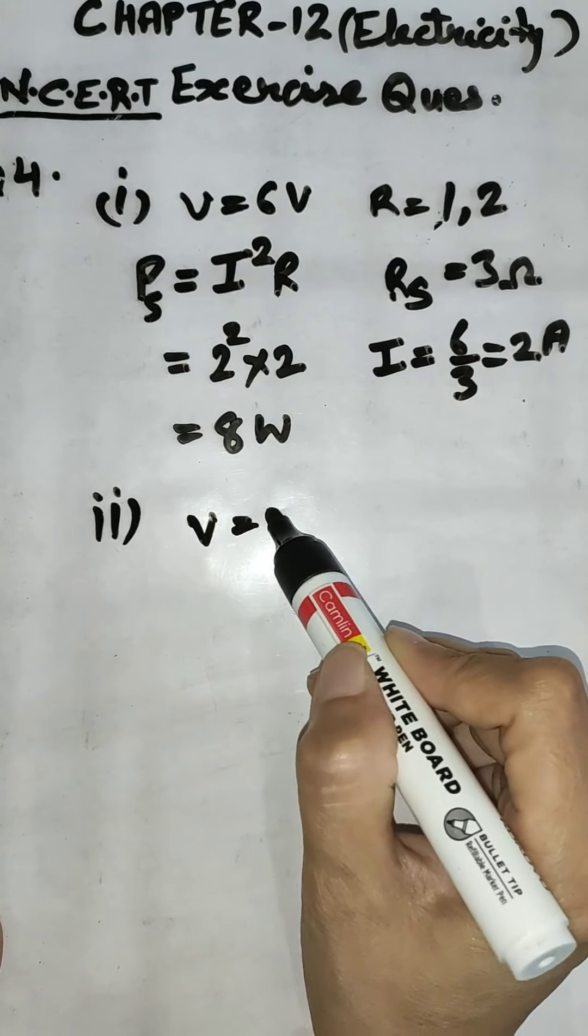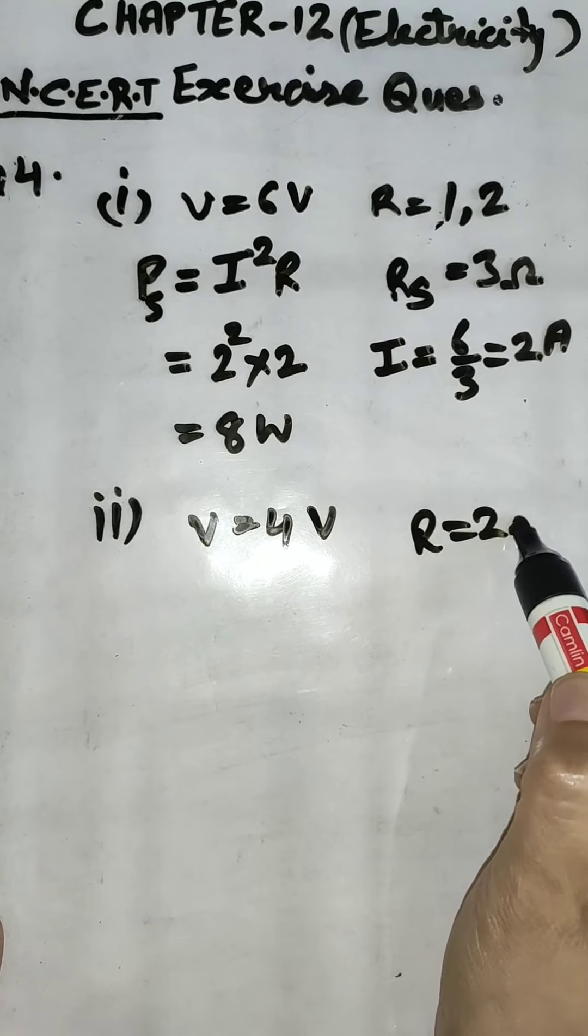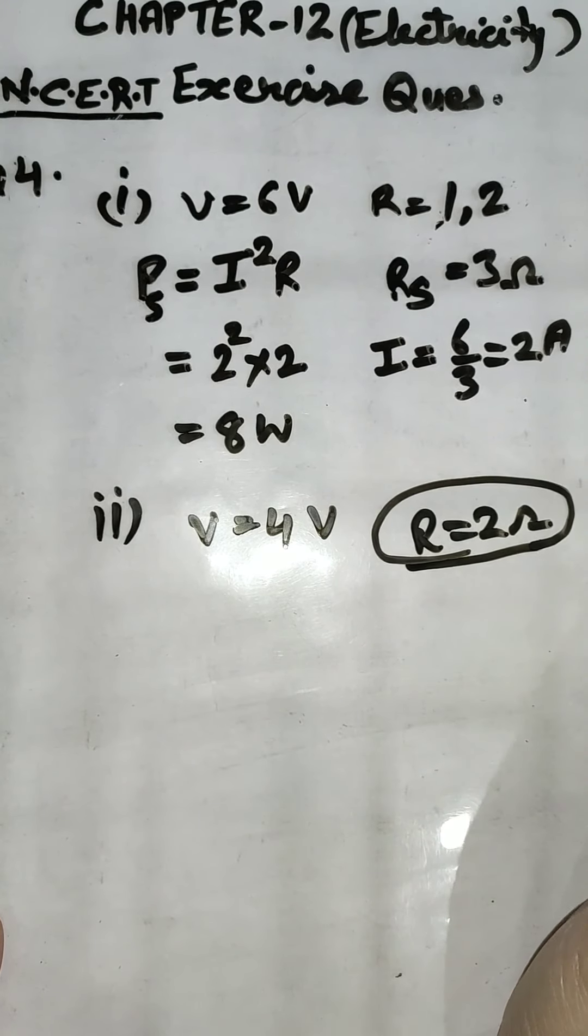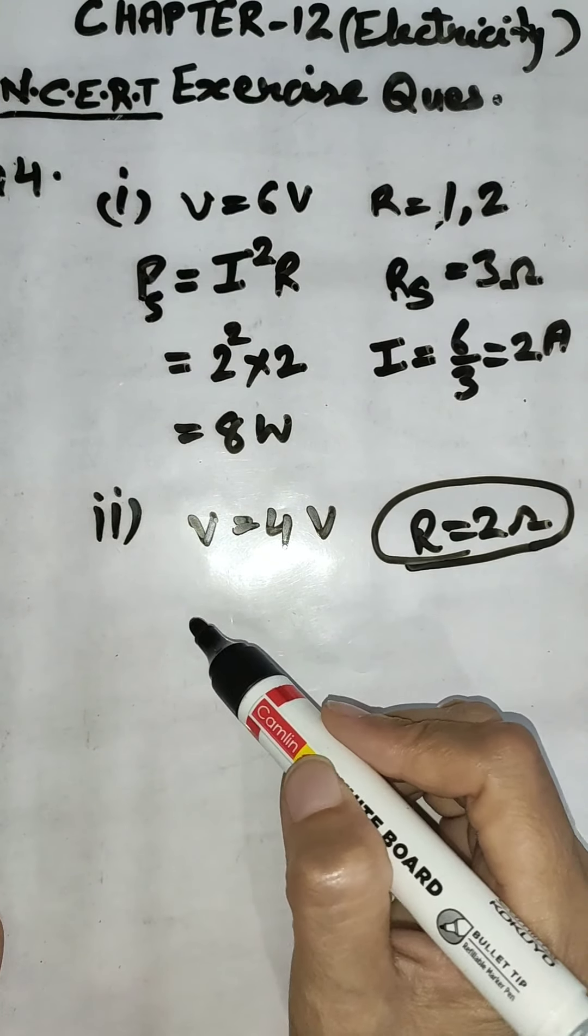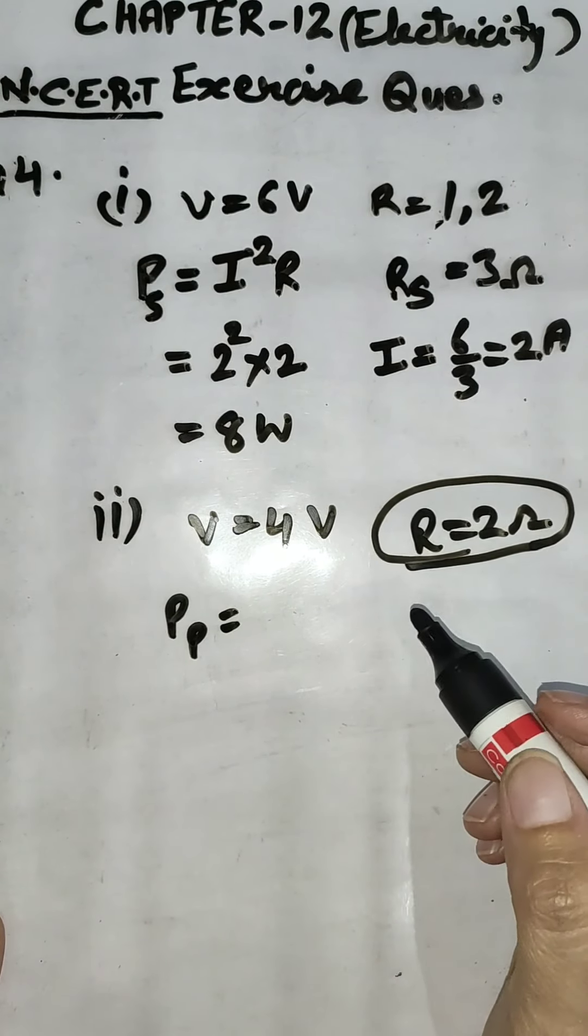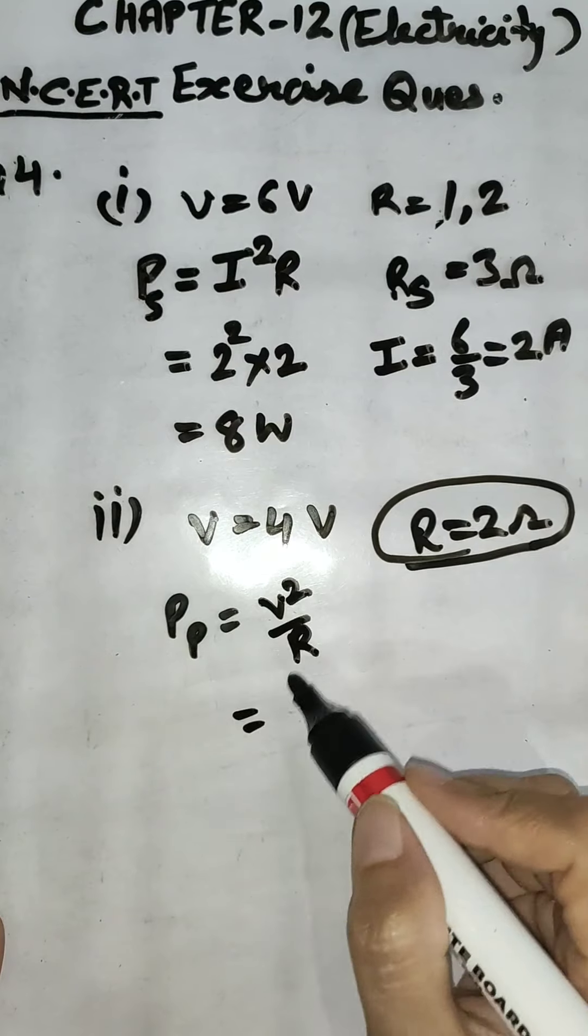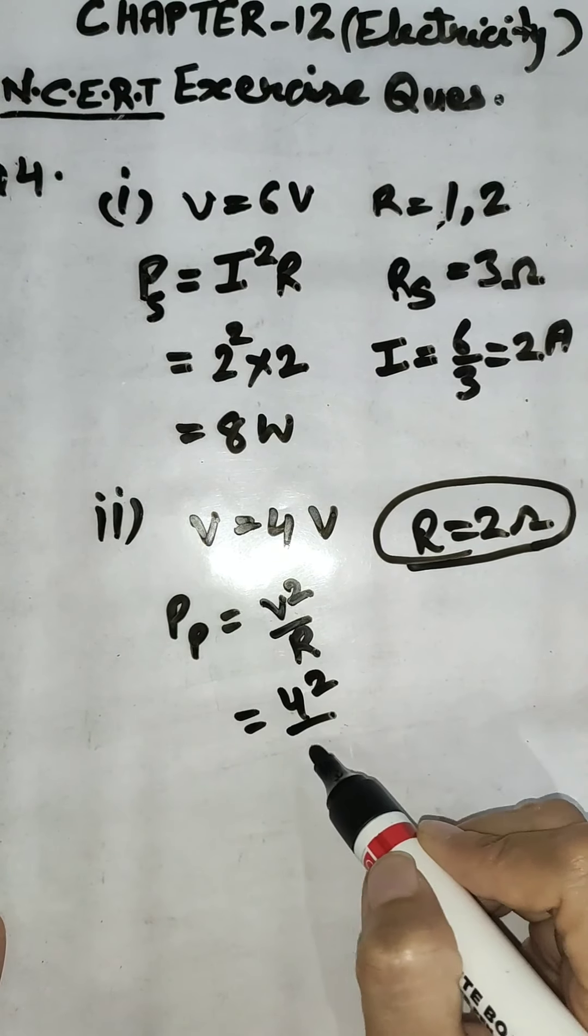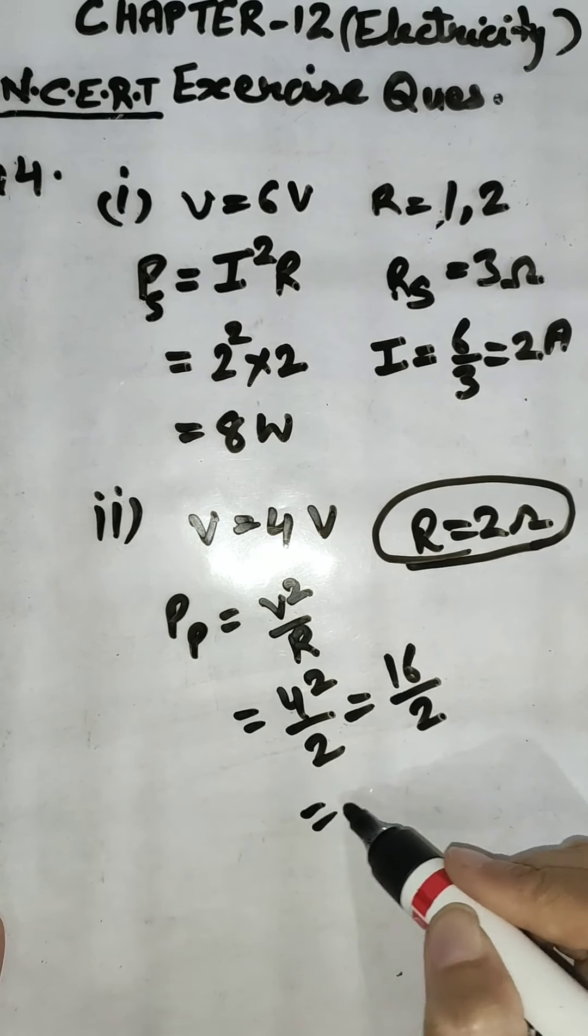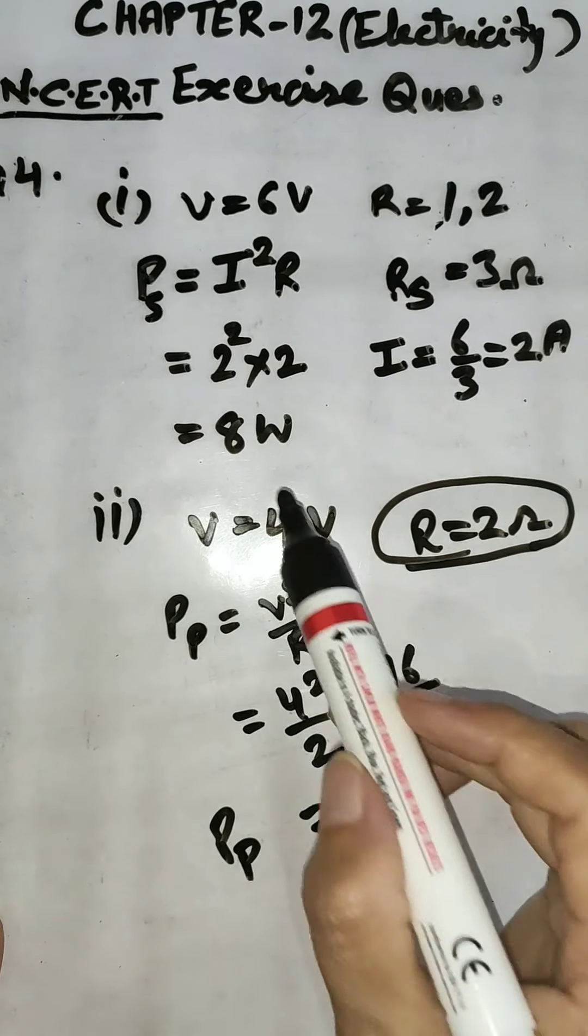In second part, we have given potential difference as 4 volt and we have to calculate across 2 ohm. We need not do anything with the other resistance because we have given parallel circuit and in parallel we know that same potential difference across both resistances. So power is equal to V square by R, 4 square divided by 2, 16 divided by 2, it will be 8 watt. Power in both the cases will remain same, that is 8 watt and 8 watt.